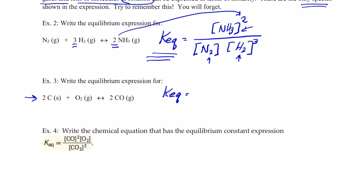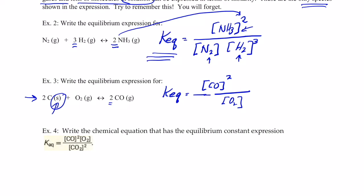For the student practice problem: KEQ equals the concentration of CO2 squared on top — remembering that the coefficient becomes the exponent. You might have put C squared and O2 on the bottom, but that's wrong. C is a solid, and we do not include solids in the equilibrium expression because we can't express their concentrations in terms of molarity — they're not homogeneously distributed throughout the reaction container. So the equilibrium expression leaves off the solid. If we knew the concentration of CO2 gas and O2 gas at equilibrium, we could plug in those values and solve for KEQ.